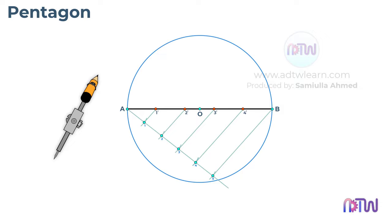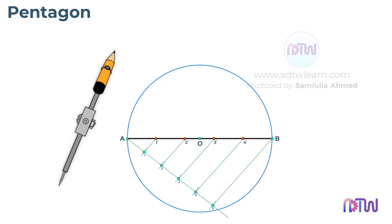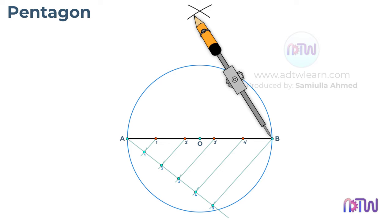take a compass and adjust its length to line AB. With this length on the compass, draw arcs above this line AB using points A and B as centers. Label this point as P.